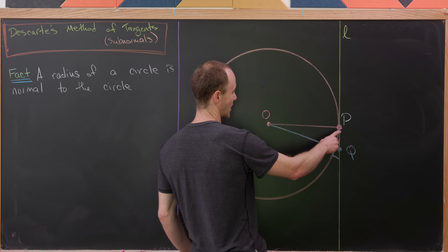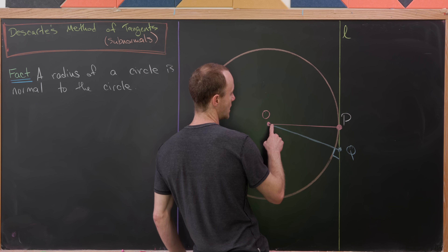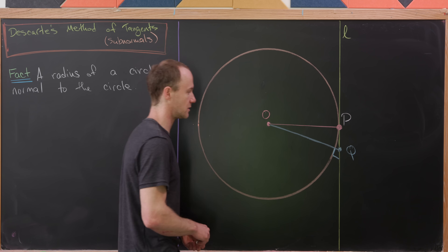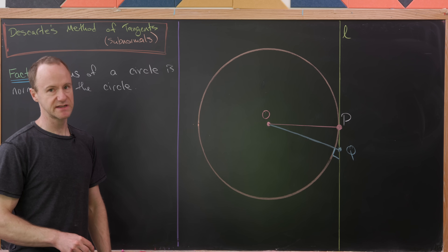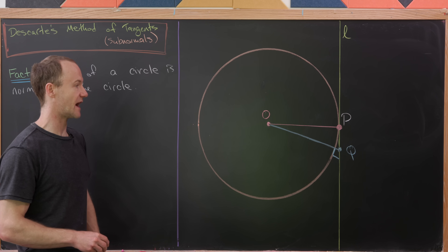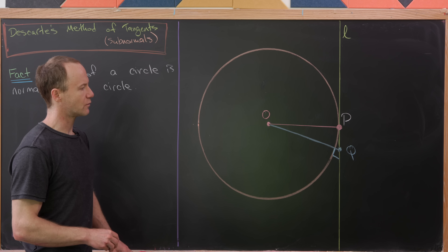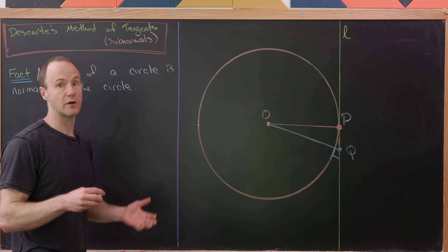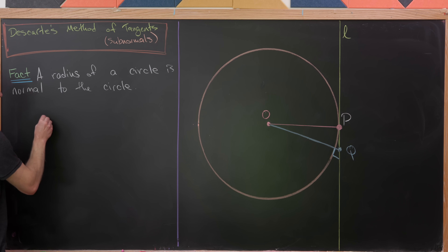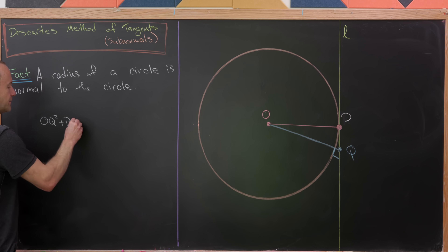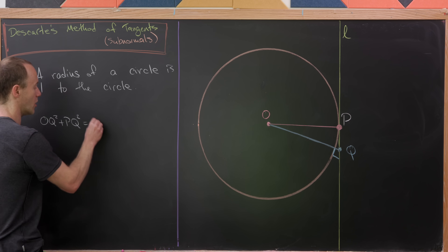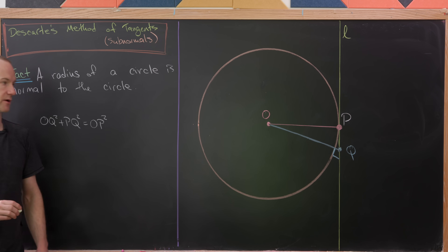Let's notice that the triangle OPQ is a right triangle. Since it's a right triangle, we can use the Pythagorean theorem on that triangle. We need to know what the hypotenuse is, which is clearly OP here. So we'll have OQ squared plus PQ squared is equal to OP squared.